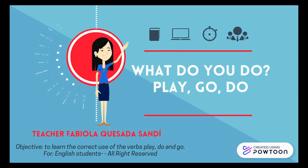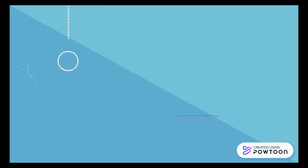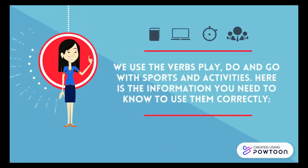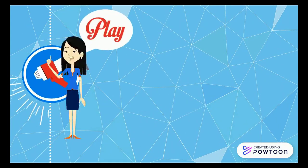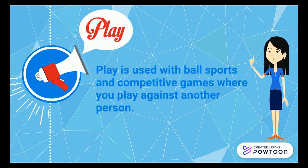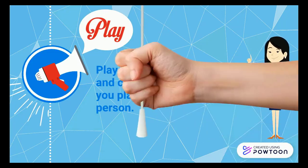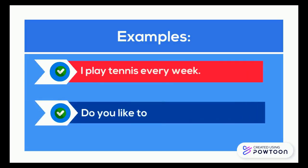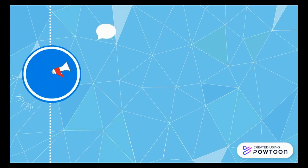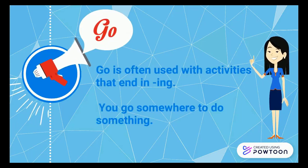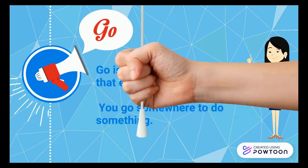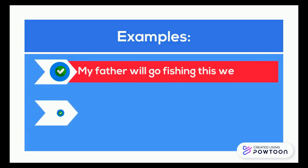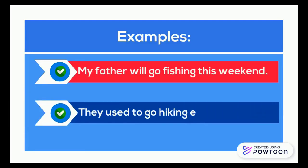We use the verbs play, do and go with sports and activities. Here is information you need to use them correctly. Play is used with both sports and competitive games where you play against another person. For example: I play tennis every week. Do you like to play soccer? Go is often used with activities that end in -ing. You go somewhere to do something. For example: my father will go fishing this weekend. They used to go hiking every morning.